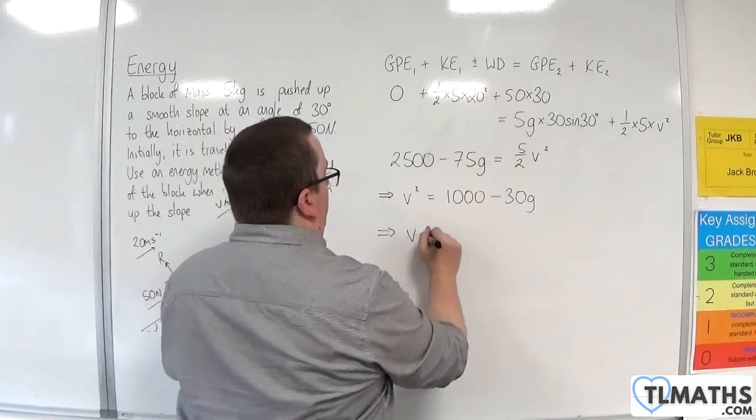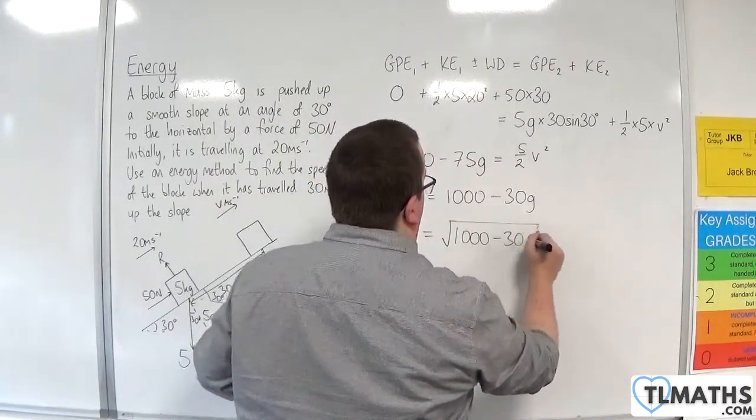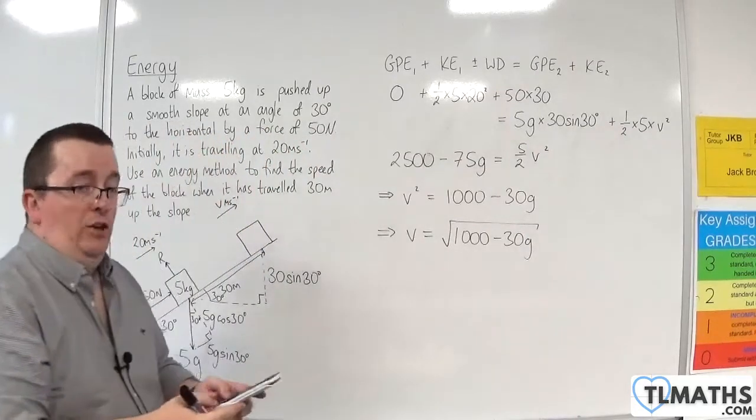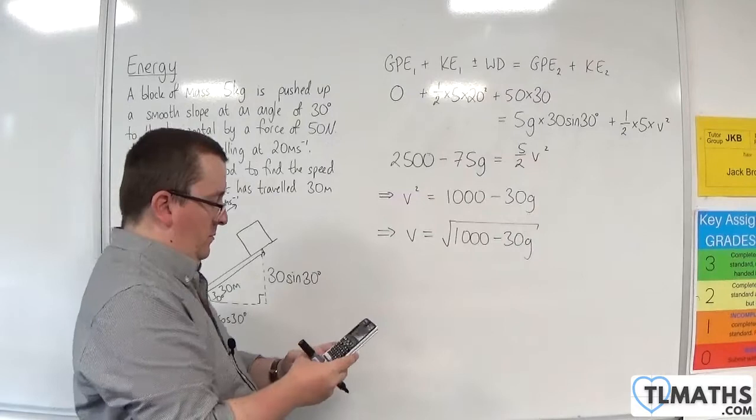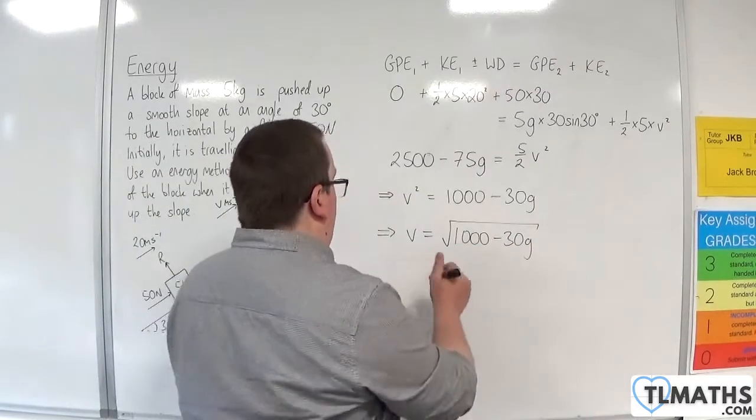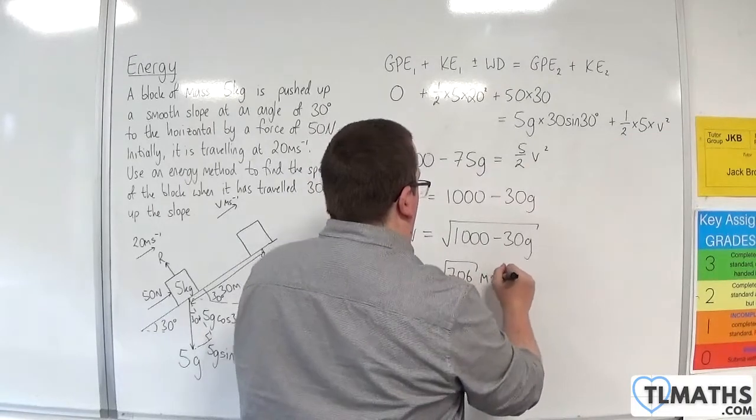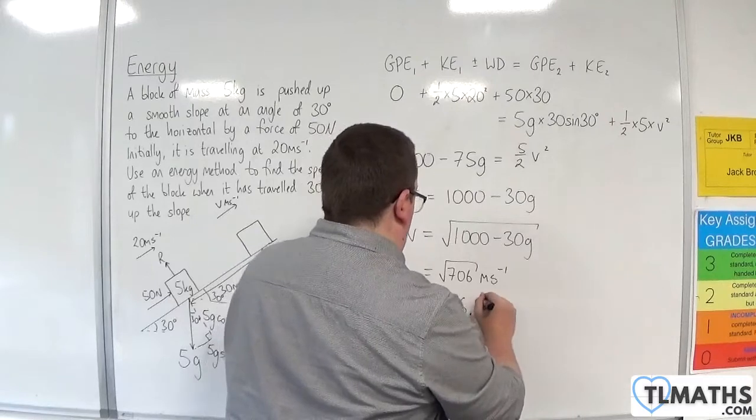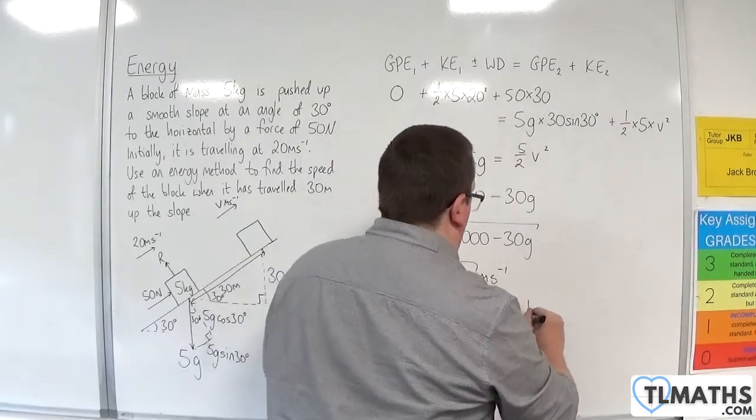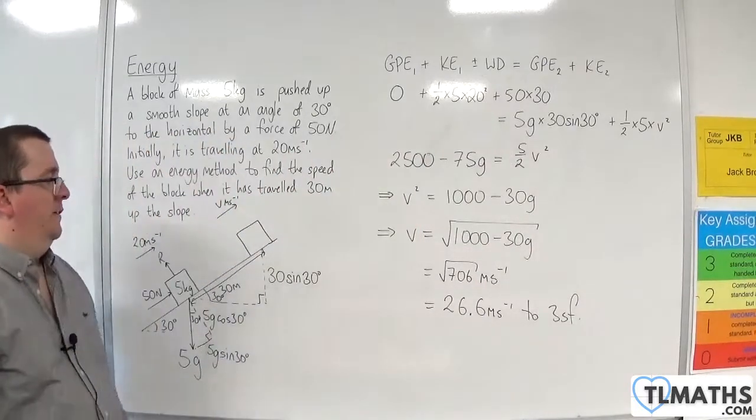V is the square root of 1,000 take away 30G, and if we plug in G is 9.8, we get the square root of 706 meters per second, which is 26.6 meters per second, to 3 significant figures.